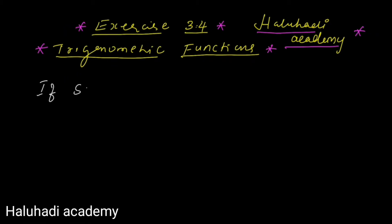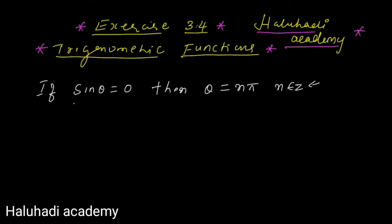The first important proof: if sin θ equals zero, then θ equals nπ, where n belongs to Z, that is the set of integers — including zero and all positive and negative natural numbers. So if sin θ equals zero, then θ is equal to nπ.